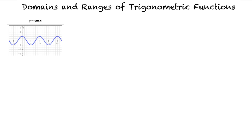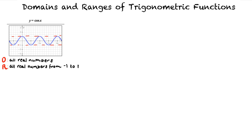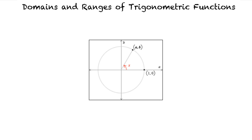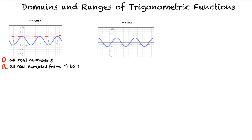The graph of y equals cosine of x looks like this. The domain of y equals the cosine of x is all real numbers, and the range is the set of all real numbers from negative 1 to 1. The graph of y equals sine of x looks like this. y equals the sine of x has the domain of all real numbers and the range is the set of all real numbers from negative 1 to 1.